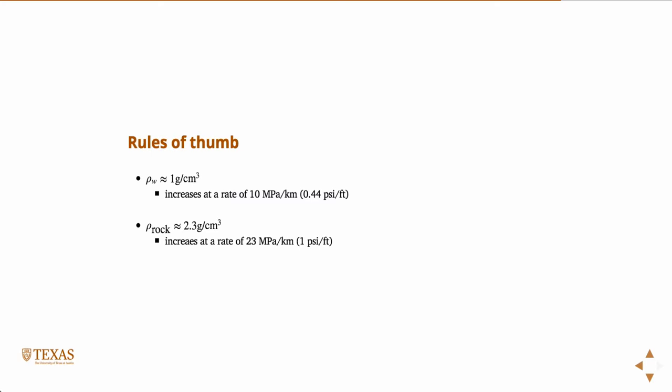If I ask you for the exact answer, you go to the lab, you'd measure the density of the rock, and perform the integration. This is, you're an engineer, sometimes you got to make decisions quickly. Try to memorize these rules of thumb, and they might help you. So the density of rock is 2.3 grams per centimeter cubed. That's not so easy to remember. But the second part is, it increases at a rate of 23 megapascal per kilometer, or very conveniently, one PSI per foot. So what is the overburdened stress over the continental United States at 8,000 feet? 8,000 PSI. Very easy.